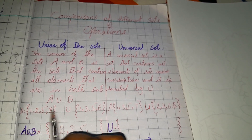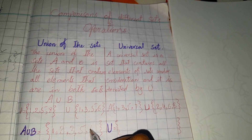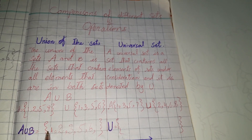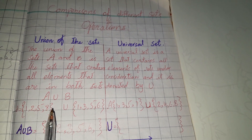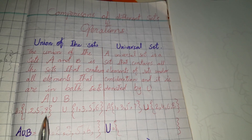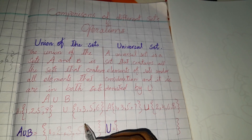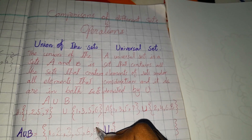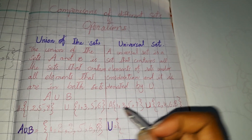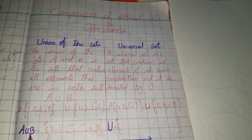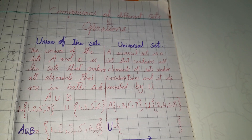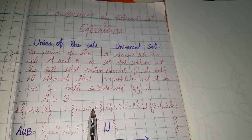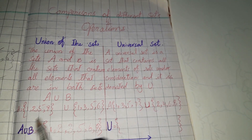From set A we write 6, because in set union we are not dealing with intersection. Last from set A we have 8. So this is our answer: A union B contains all these elements. This is how the union of sets A and B is determined.